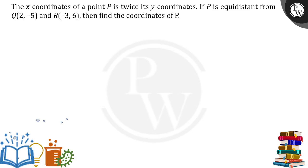Hello everyone. The x-coordinates of a point P is twice its y-coordinates. If P is equidistant from Q(2, -5) and R(-3, 6), then find the coordinates of P.